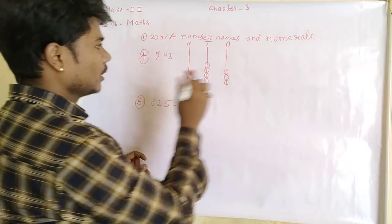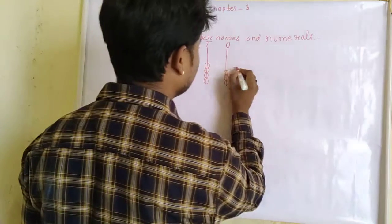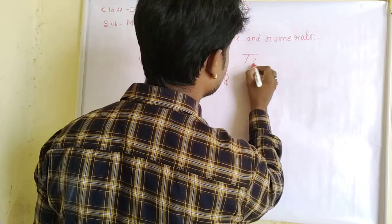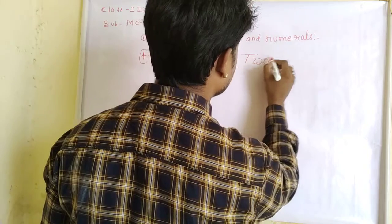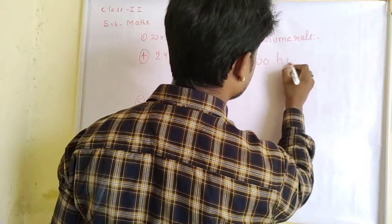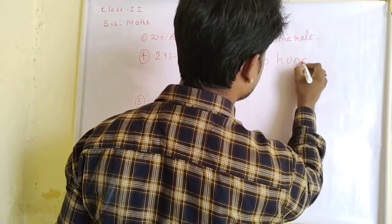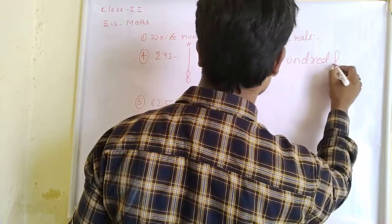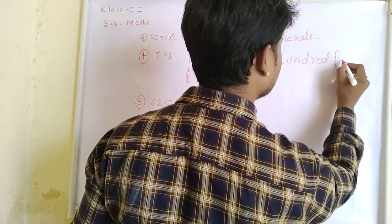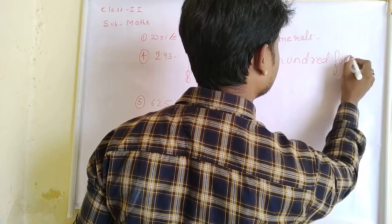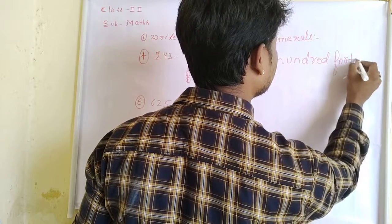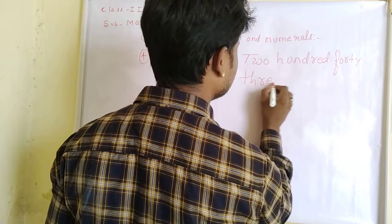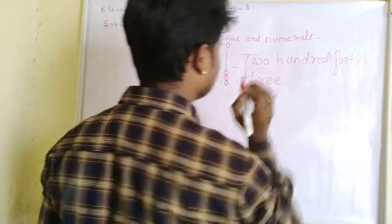And the number in the hundreds place is 2, so we draw 2 small circles. So this represents 200. We write the number name: two hundred forty-three. This is your answer.